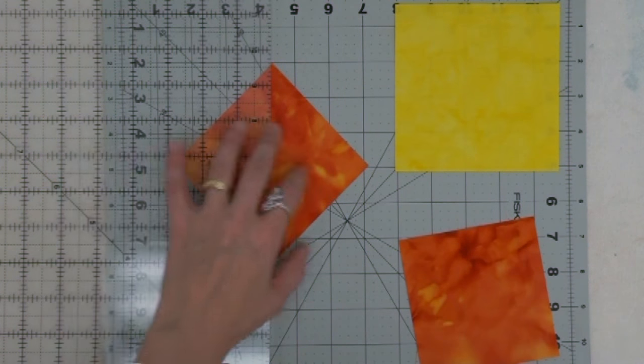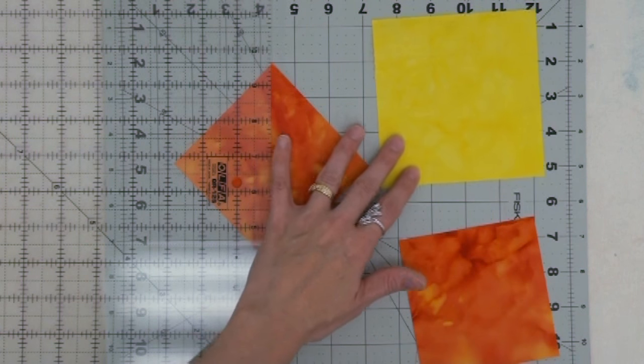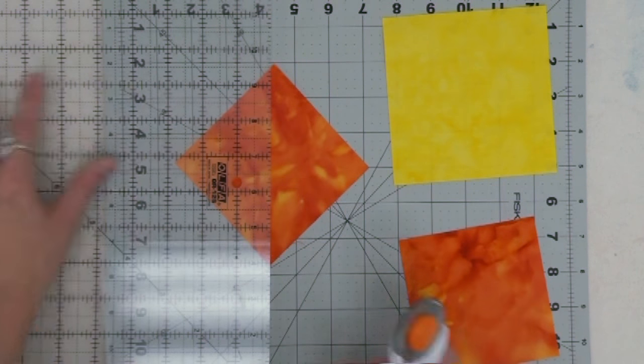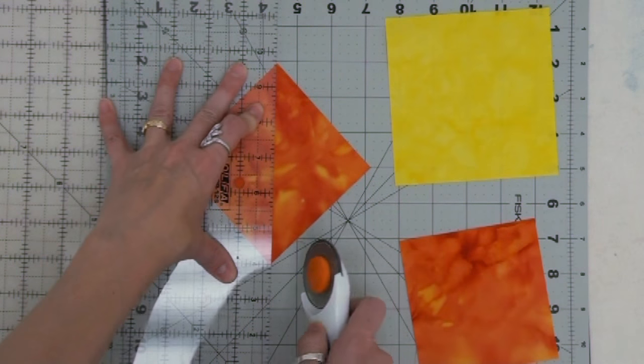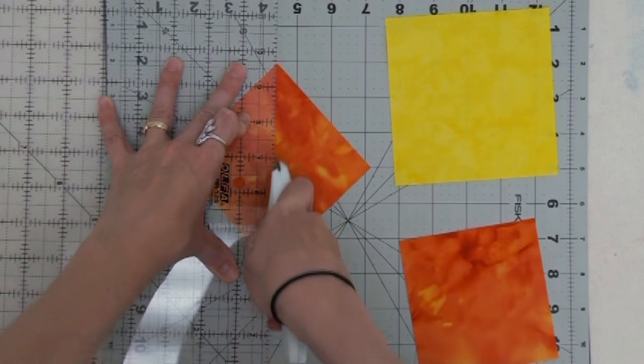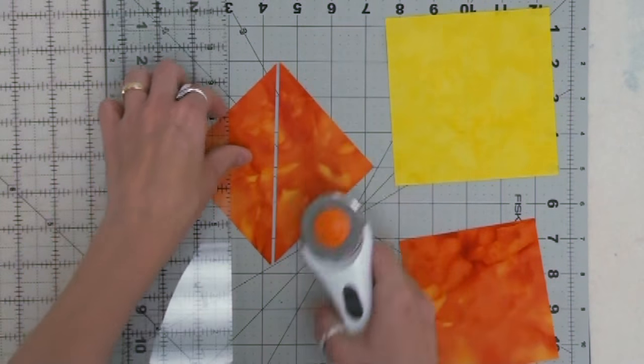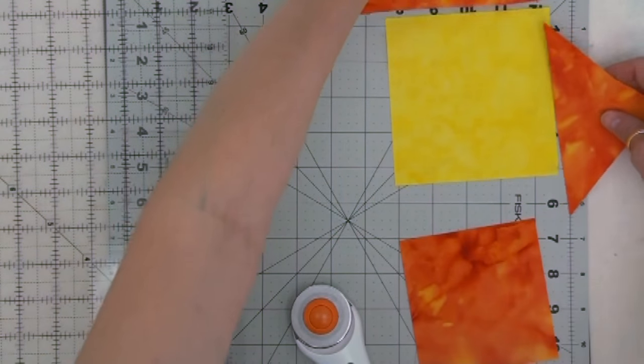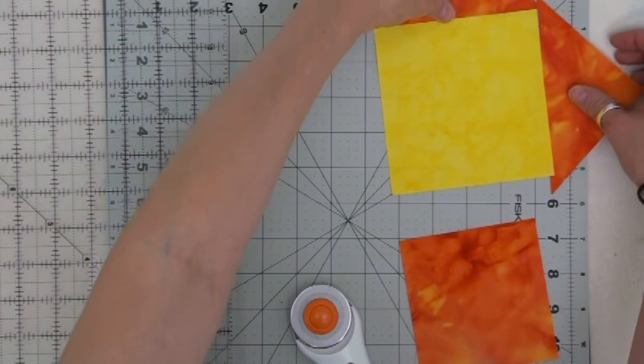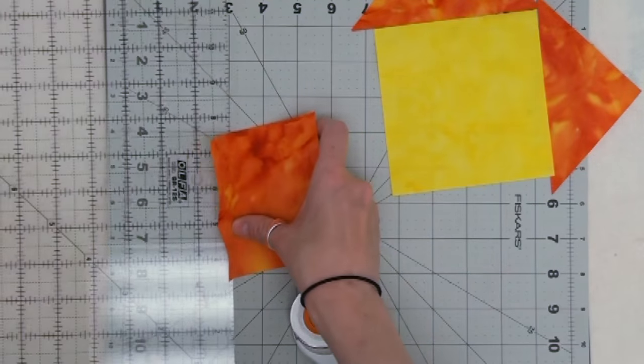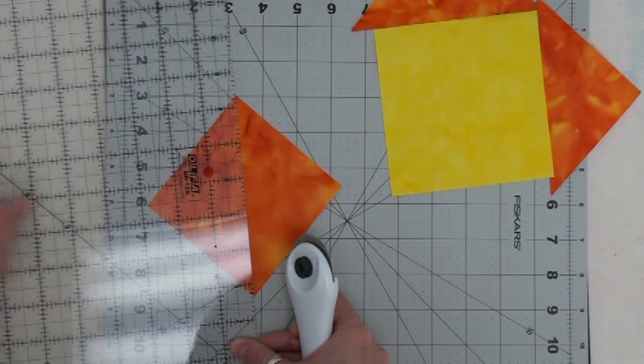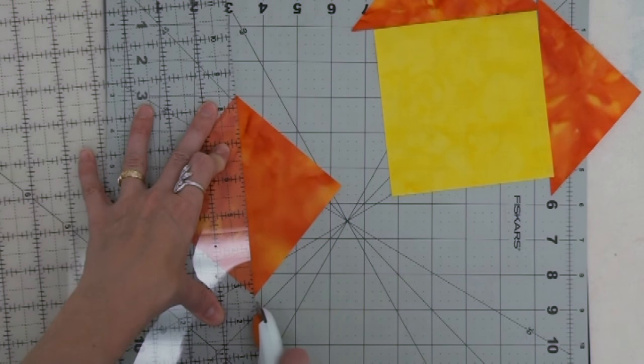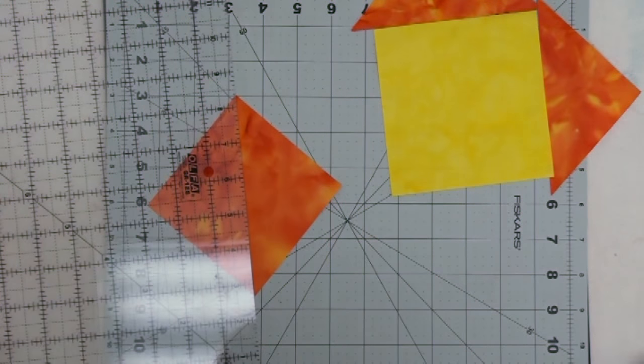Let's get started first piecing our square in a square block. You're going to get started with your fabric B squares. We're going to cut them in half diagonally. Just set up your ruler right over it and slice those squares in half. You can see how we're going to piece this on all around that fabric C square in the center.